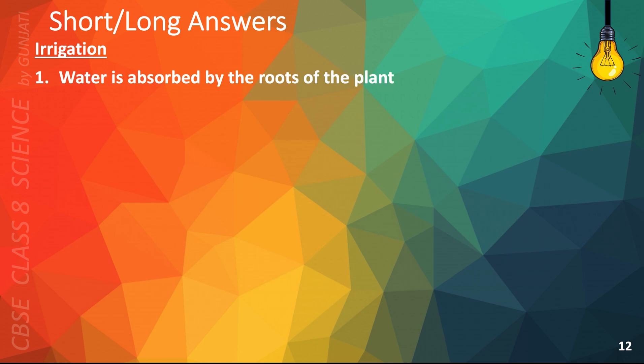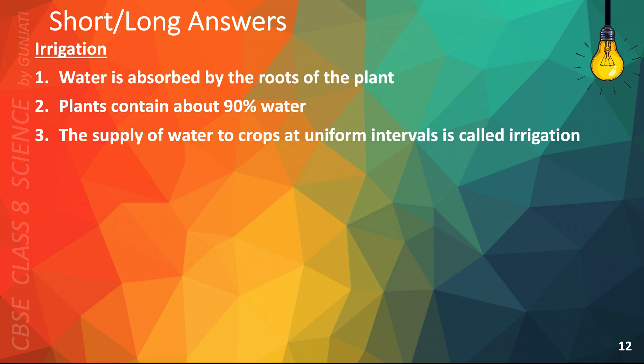The following points will help you answer questions on irrigation. Water is absorbed by the roots of the plant. The supply of water to crops at uniform intervals is called irrigation. During summer season, the frequency of irrigation is the highest.